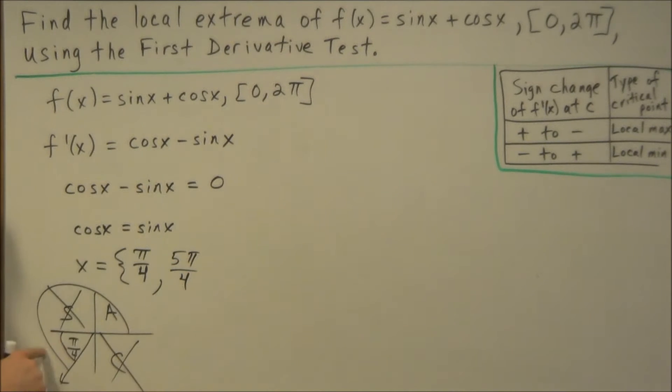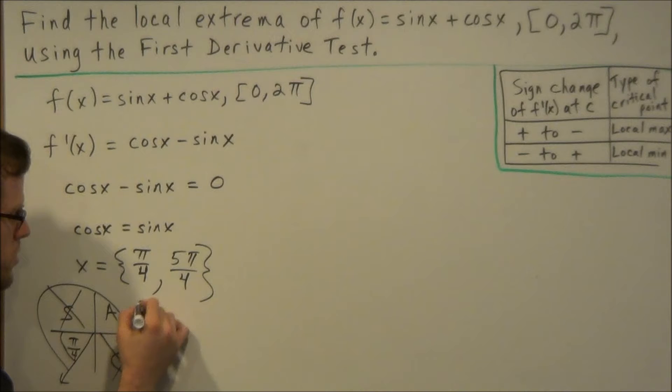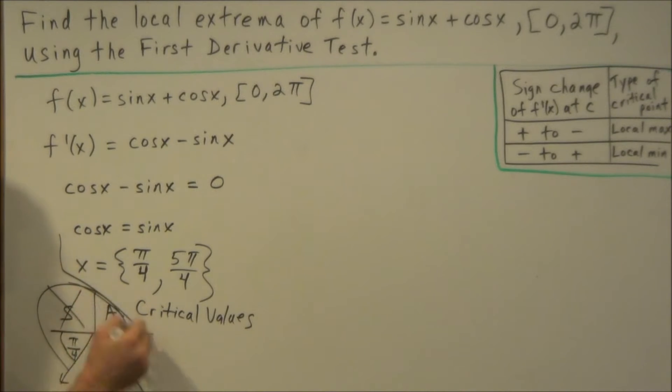So our second solution is 225 degrees. But if we convert it to radians, it'll be 5π/4. So this represents our critical values. So with these critical values here, what we could do now is classify them as being a local maximum or local minimum of f(x).